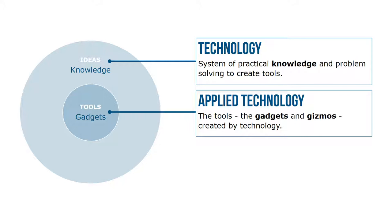So why does this distinction in technology matter? The differentiation between the ideas of technology and the gadgets of applied technology reminds us that technology itself is much broader than the gadgets or gizmos we use to label it. Technology is about applying knowledge and problem solving to create better outcomes — whether that's the tools we use, like the wheel, or the systems we integrate into our businesses, like human resource information systems.